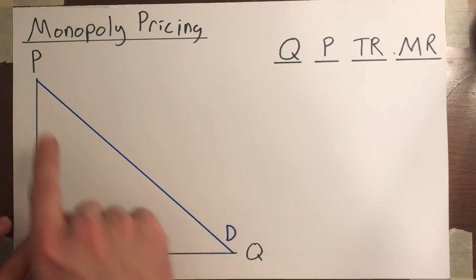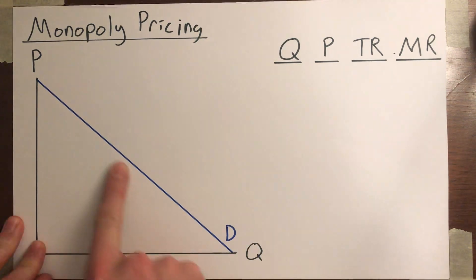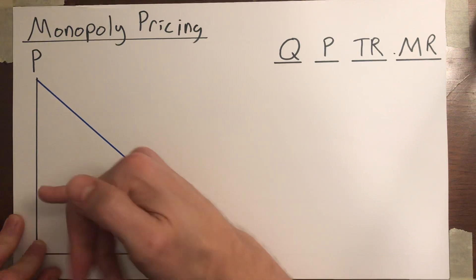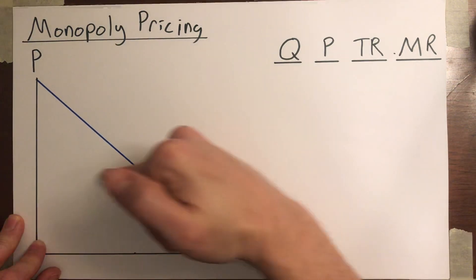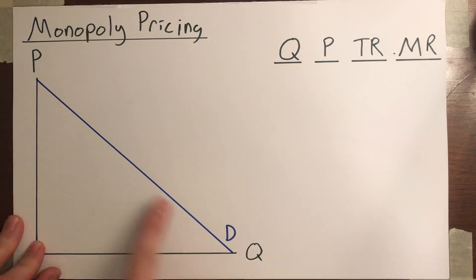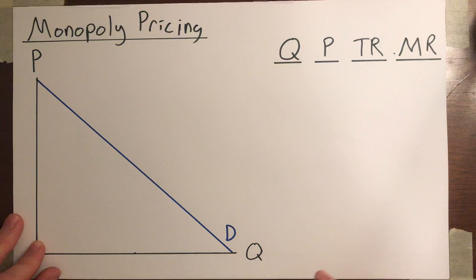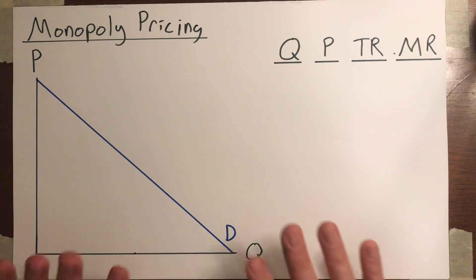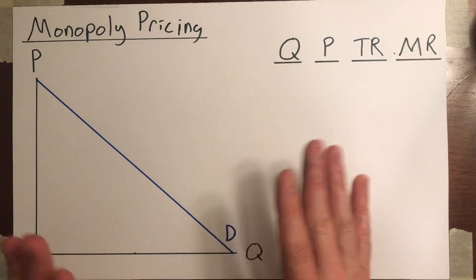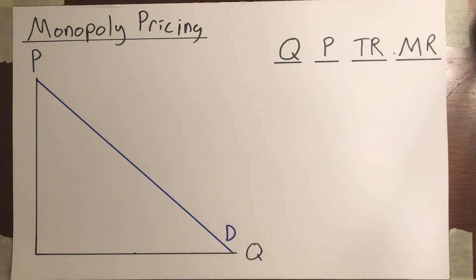So the monopolist is facing a downward sloping demand curve, that's the market demand curve. Remember, the perfectly competitive firm had to just take the market price and use that as its demand curve. But the monopolist can raise its price and lose some customers but still make some sales. It can cut its price and get more customers. And so the monopolist is deciding what price do I want to set in order to maximize my profits.